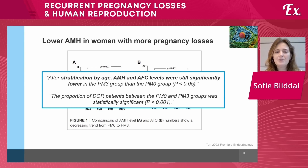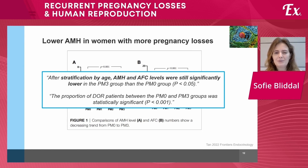The authors concluded that even after stratification by age, AMH and AFC levels were still significantly lower in the group who had more miscarriages than those who did not have any miscarriages. Also, the proportion of women with diminished ovarian reserve was higher in the group with more miscarriages.